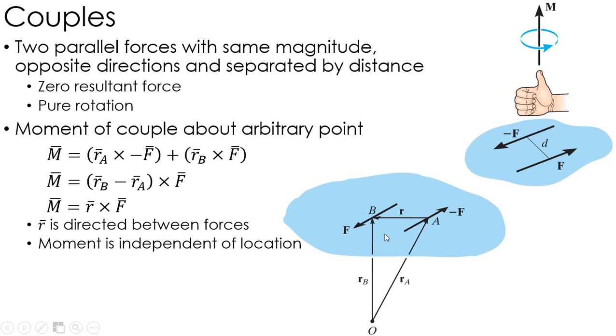Now, the fact that I only am concerned with the position between the two forces means that the moment is independent of location. Regardless of where I choose point O, this equation for the moment of the couple is exactly the same. It's still R cross F, R being the position vector between the two forces. If I choose point O over here, the moment is still the position vector from A to B or from B to A. Any place I choose, I'm going to get the exact same value for the moment of that couple.